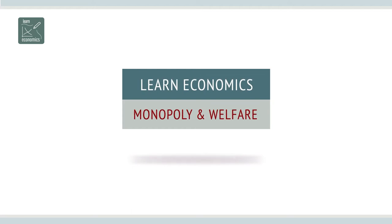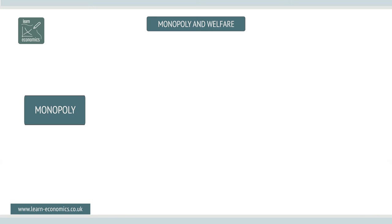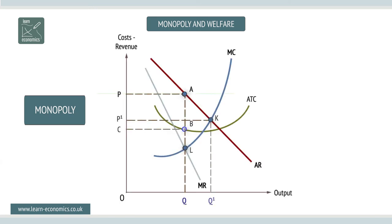Monopolies and economic welfare loss. The profit-maximizing monopolist will operate at output Q and price P. So why is this a problem?